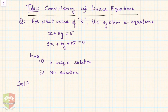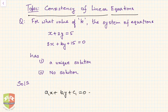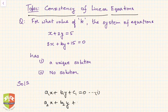If there are two linear equations, let us say equation one is a1x plus b1y plus c1 equals 0, and equation two is a2x plus b2y plus c2 equals 0.